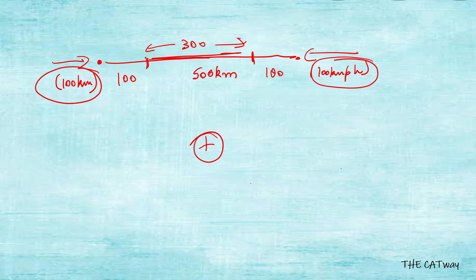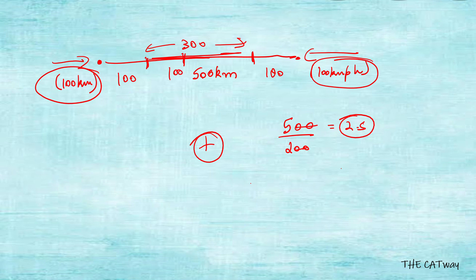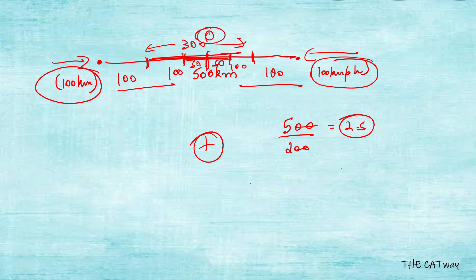So in how much time will they meet? The total distance is 500 and the relative speed is 200, so the total time taken is 2.5 hours. We can verify: after one more hour another 100 each, so 200 gone, 100 remaining. In the final half hour, each covers 50, meeting at zero distance. So it comes out to 2.5 hours. This is the concept of relative speed.